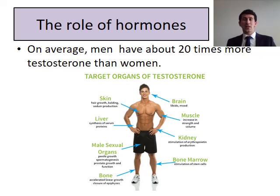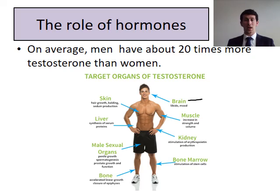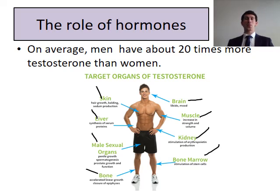As previously stated, it's hormones that do most of the work for gender development. Chromosomes determine what hormones are going to be released, but it's hormones that determine gender development. The main one we've discussed is testosterone. On average, males have about 20 times more testosterone than women. Testosterone has many target sites — it affects the brain, muscles, kidneys, bone marrow, bones, sex organs, liver, and skin — showing how many areas testosterone can influence, especially in gender development.